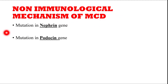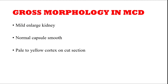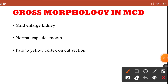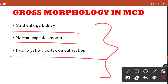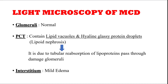Certain non-immunological mechanisms are also observed in minimal change disease. If the patient has a mutation in the nephrin or podocin gene, they are at greater risk for developing nephrotic syndrome. Regarding gross morphology, the kidney is absolutely normal — there may be mild enlargement, but otherwise it is normal. The renal capsule is smooth, and there is a pale to yellow cortex on cut section, so the kidney is almost near normal.